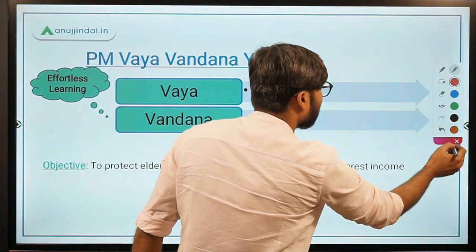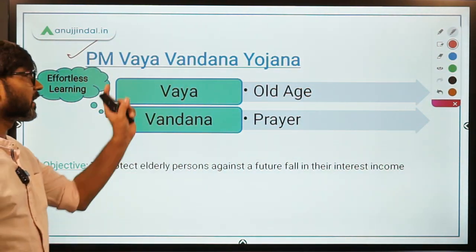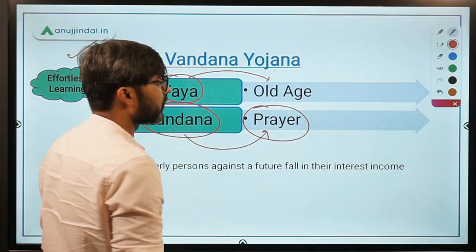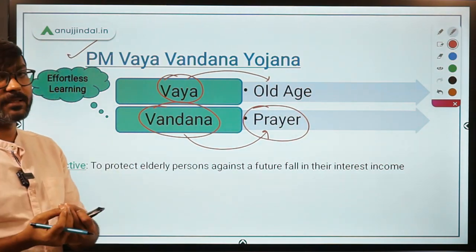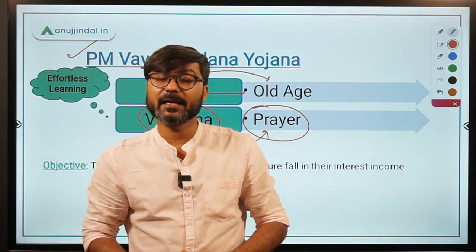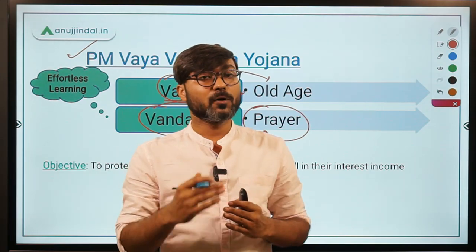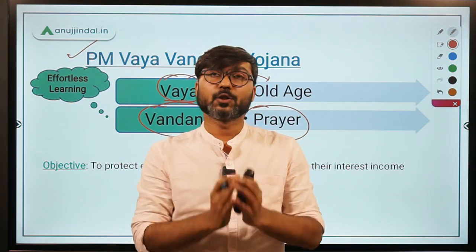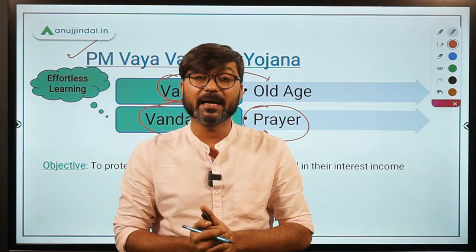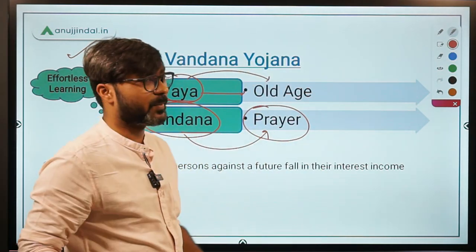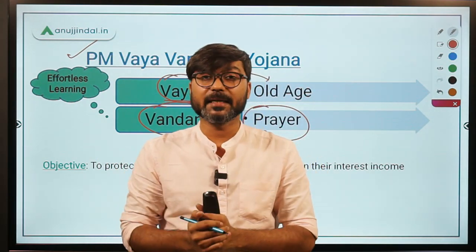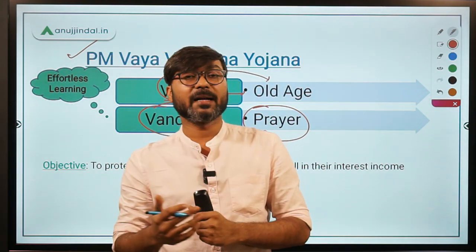Let us talk about the objective of the scheme. The name is Pradhan Mantri Vaya Vandana Yojana. 'Vaya' means old age and 'Vandana' means prayer. So we can interpret this as: an old age person, let us say Mr. X, is going to pray that the rate of interest does not go down. The government of India is helping with this scheme by providing assured returns.